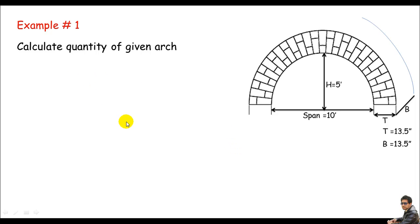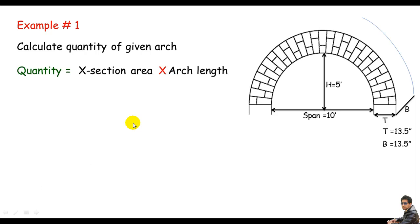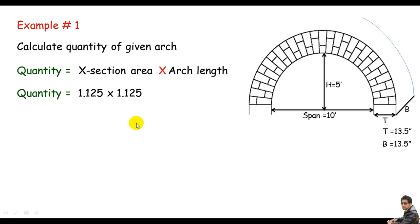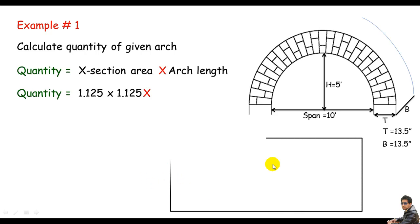Now I'll calculate the quantity of this arch. The quantity means the volume, and the volume is always the cross-section area times length. I can write this as thickness times breadth times length. The 13.5 inches equals 1.125 feet. So we have 1.125 × 1.125 times the length.